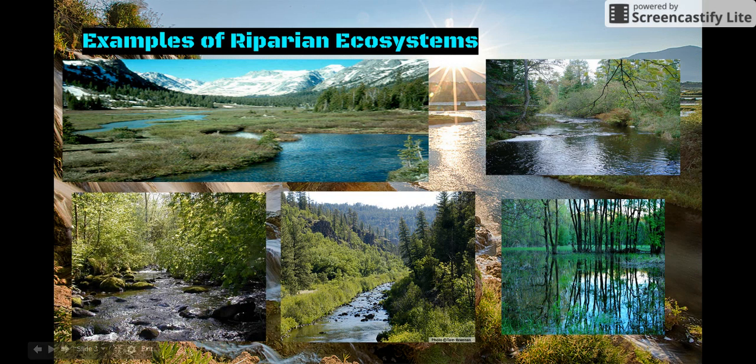Here are some examples of Riparian Ecosystems. You can see here where they have very lush vegetation.